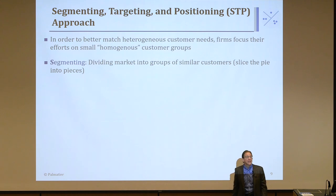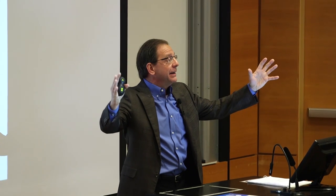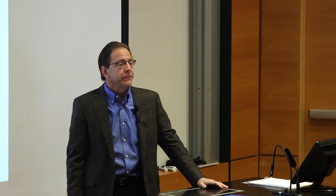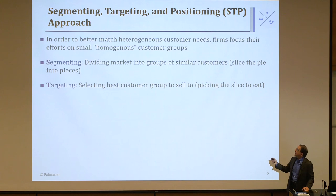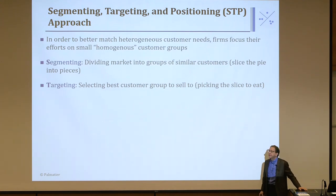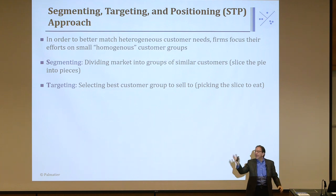That is segmenting — dividing the market into groups of similar customers. If you think of the market as a piece of pie, segmenting is slicing the pie into pieces. The second step is Targeting — selecting, uniquely for each firm, which segment to focus your business on. As an automotive manufacturer, I might decide I can't make cars for every segment. I'll go after one — maybe the minivan segment. To keep the pie metaphor: targeting is selecting which piece of pie you want to eat.